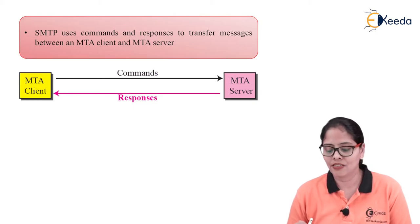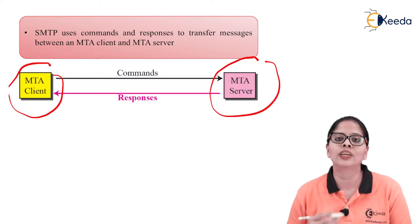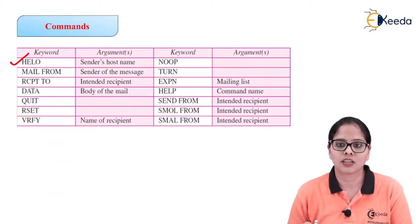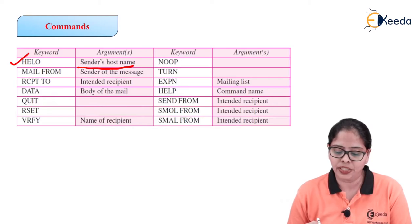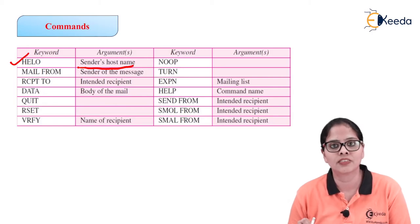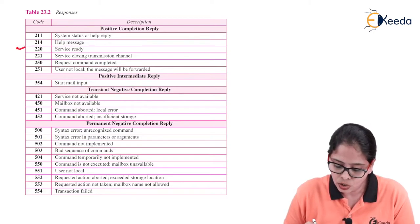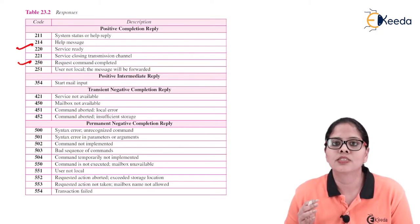SMTP uses commands and responses to transfer the message between the MTA client and server. The commands include: HELO meaning the sender hostname, MAIL FROM meaning the sender's message, and RCPT TO meaning the intended recipient address. In response, the server sends a code. Code 220 means service ready, and code 250 means request command completed.